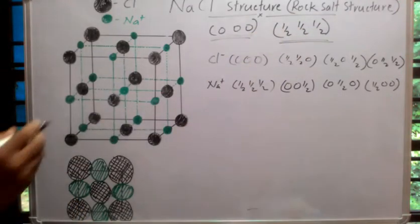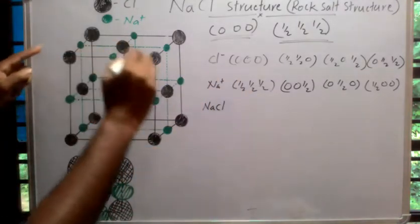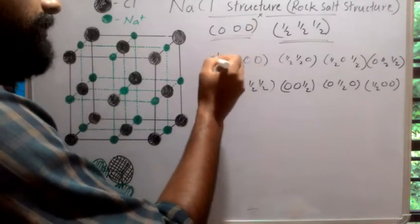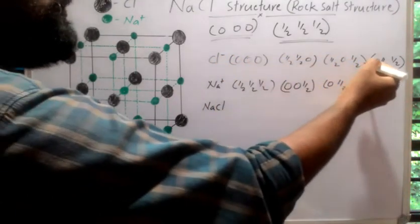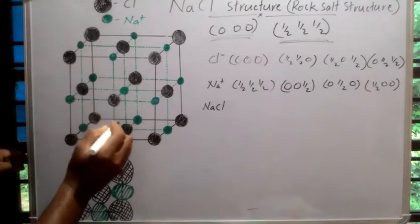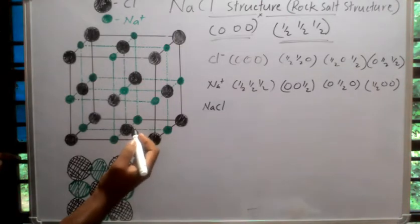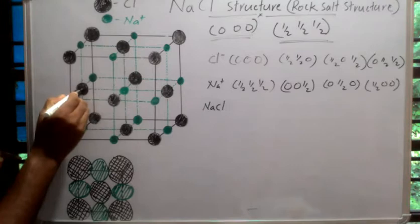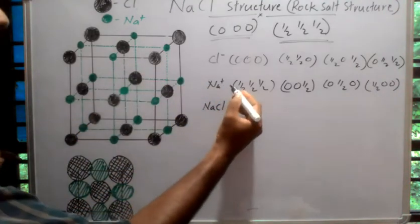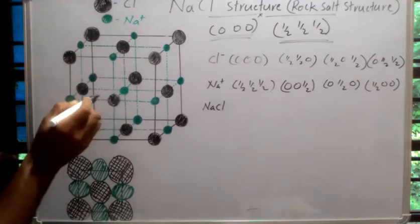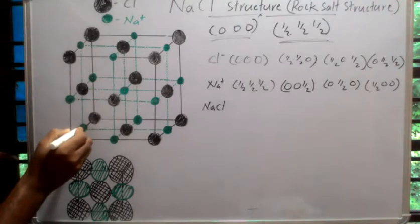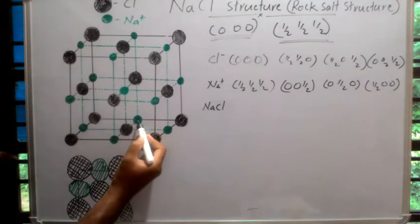There are four units of sodium chloride in each unit cube. The chlorine ions are at positions: (0,0,0), (1/2,1/2,0), (1/2,0,1/2), and (0,1/2,1/2) — corresponding to the FCC lattice points including face centers on the left face and back face. The sodium ions are at positions: (1/2,1/2,1/2), (0,0,1/2), (0,1/2,0), and (1/2,0,0).